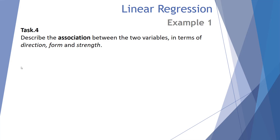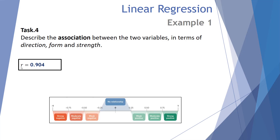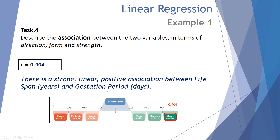Task number four is to describe the association between the two variables in terms of direction, form, and strength. With an r value of 0.904, it's positive — giving us a positive association. 0.904 is very close to 1, so it is a very strong positive linear association. We can state: there is a strong, positive, linear association between lifespan in years and gestation period in days.